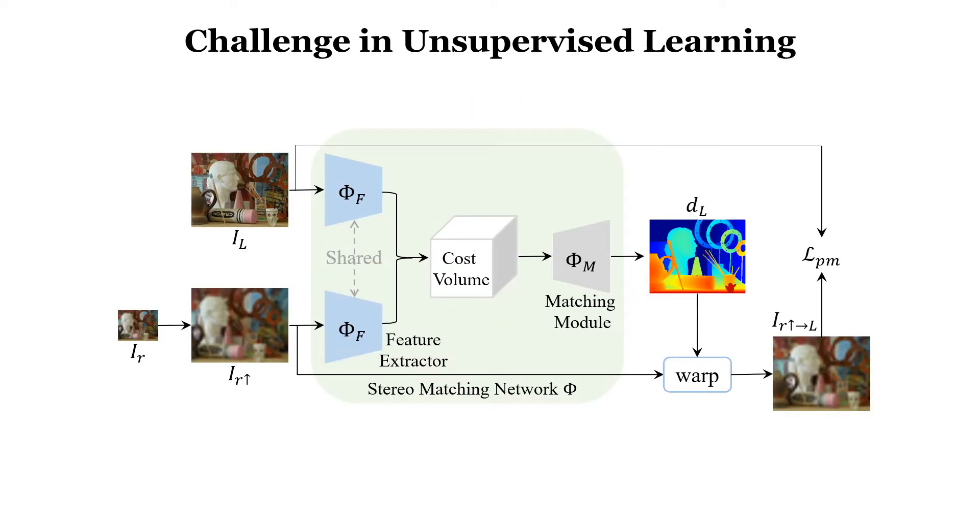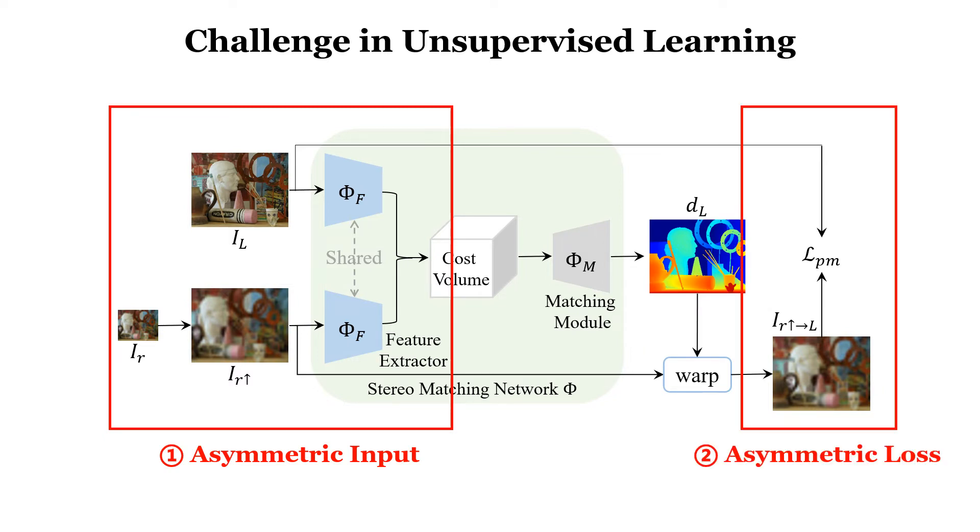Intuitively, resolution asymmetry may challenge unsupervised stereo matching twofold. First, it may be more difficult for the feature extractor to extract symmetric features from asymmetric inputs. Second, the photometric loss may lose efficacy since photometric consistency does not hold for asymmetric stereo.